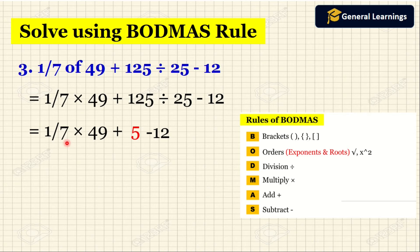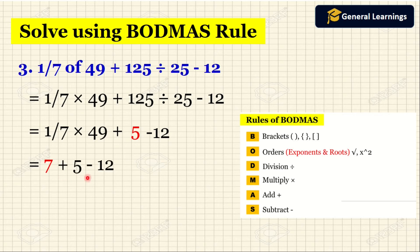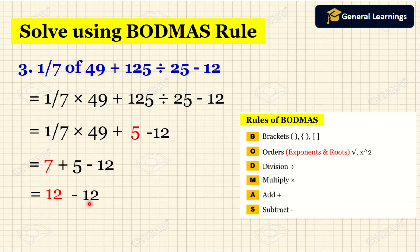Here they have given 1 by 7, which is a fraction, so we multiply this fraction with 49: 1 into 49 equals 49, then 49 divided by 7 equals 7. We write the remaining numbers as it is. Now we have addition and subtraction: 7 plus 5 equals 12, then 12 minus 12 equals 0. So when we simplify this question we get the answer as 0.